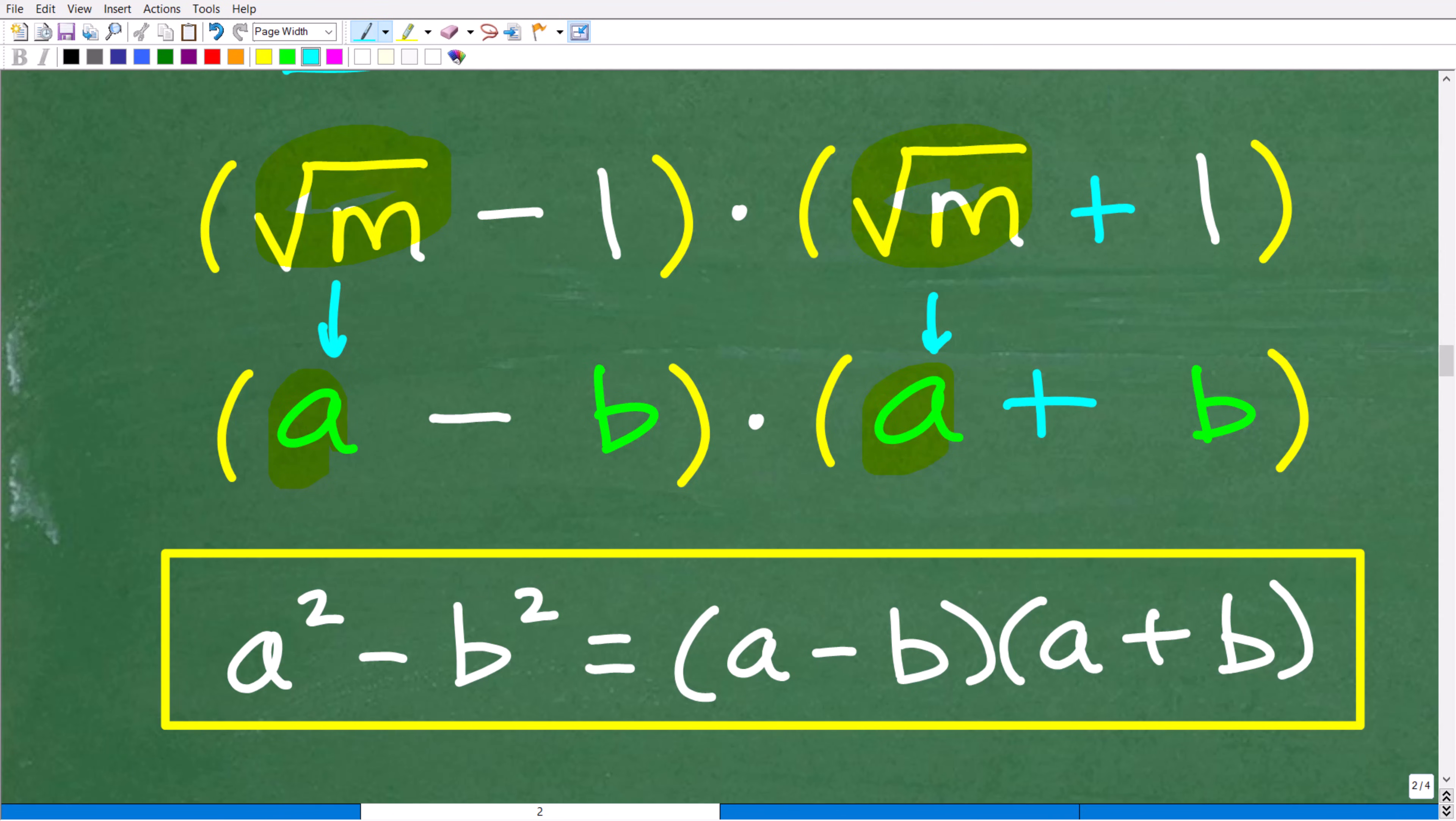And then b is just another number. So we have the same number here, one. So we'll call that, or we can think of that as b. And then we have one right here. So it's the same value. So the square root of m minus one or a minus b, and this would be a plus b. So you could see, basically, our problem fits this pattern, a minus b times a plus b.